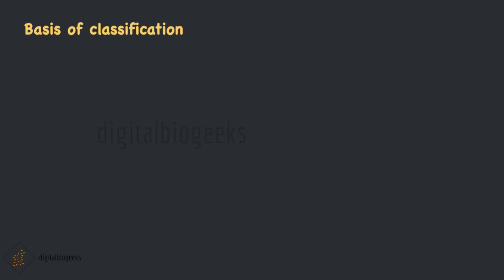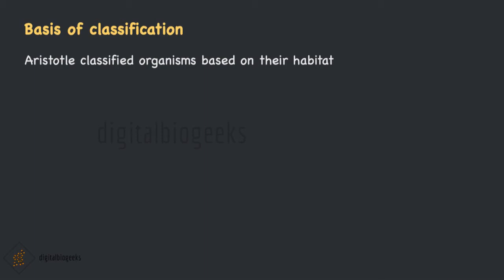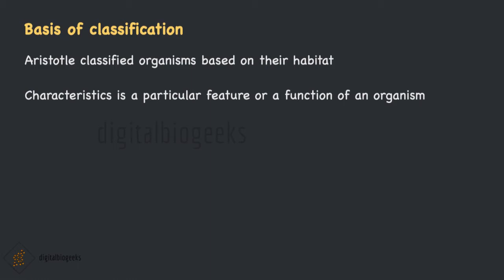From ancient times, people tried to classify animals into different groups for understanding them. The great thinker Aristotle classified animals based on their habitat, that is where they live. According to him, organisms can be classified based on whether they live on land, water or air. But this cannot be considered an appropriate way of classification, as land animals include frogs, dogs and humans which are very different from each other. Later, biologists tried to classify organisms based on their appearances and characteristics. A characteristic is a particular feature or function of an organism.